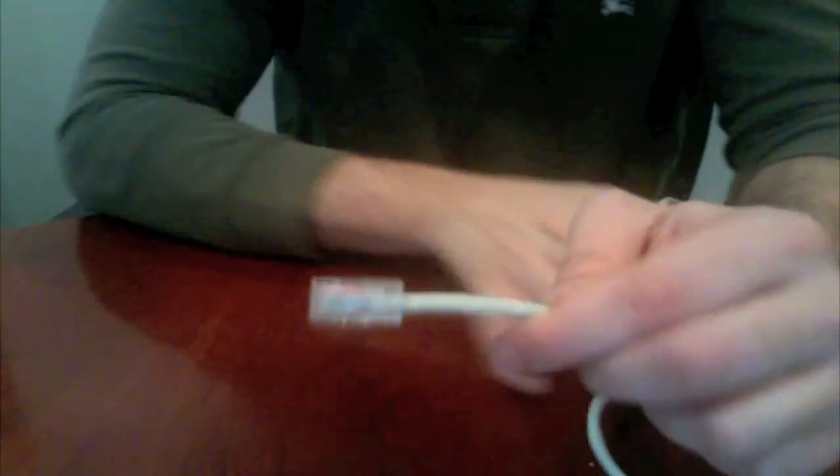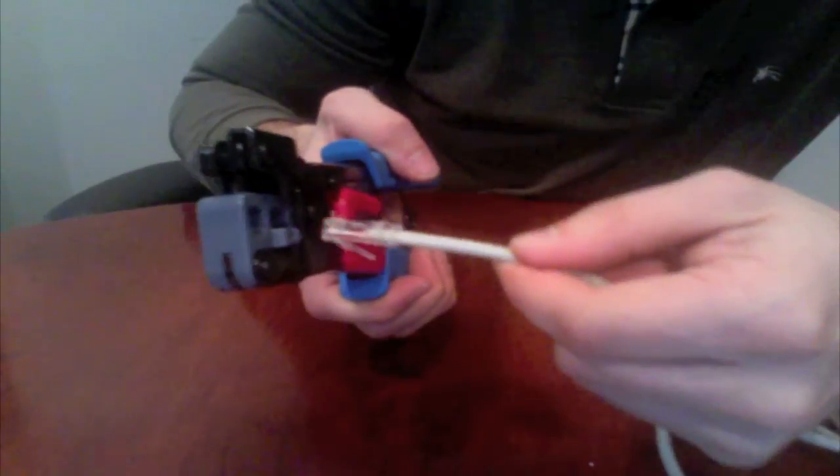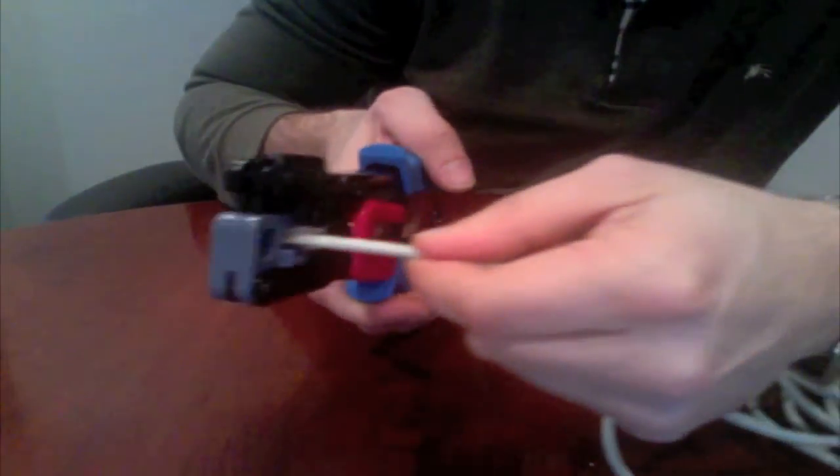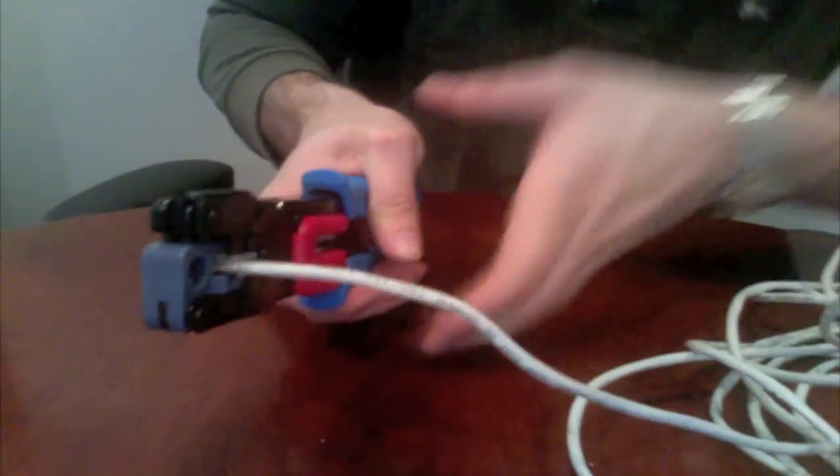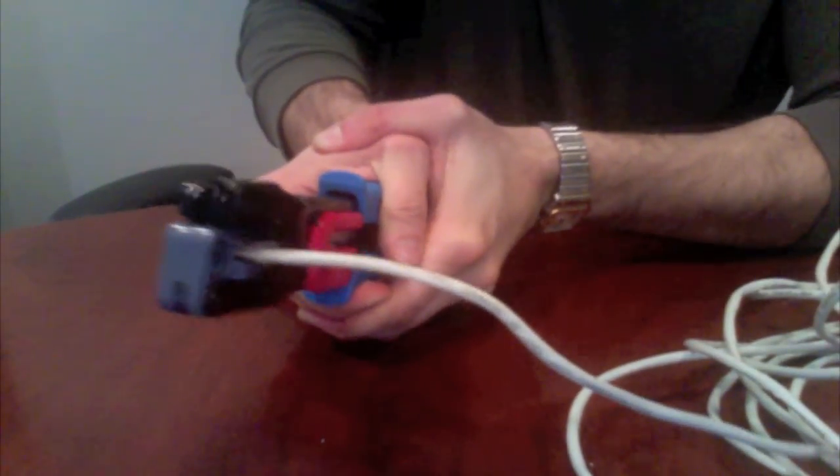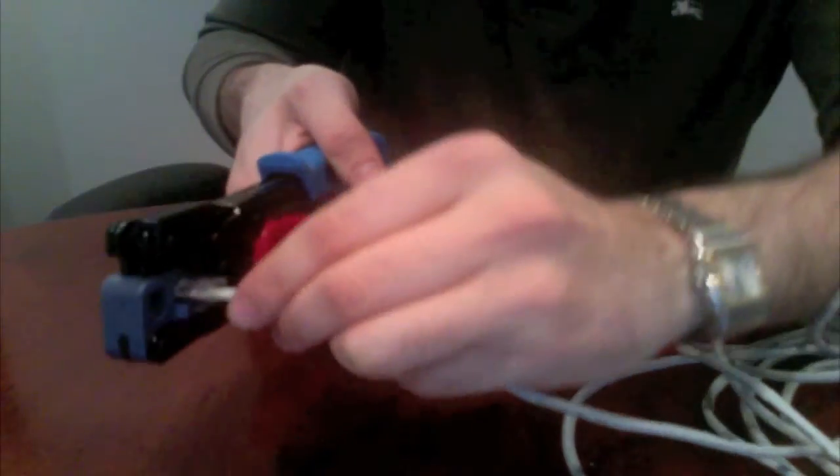Pretty easy right? Well we're not done yet. Now we have to secure our RJ45 connector to our cable. Let's grab our crimping tool and we want to insert the RJ45 connector into the RJ45 slot on our crimping tool. Now we squeeze. Make sure to squeeze tight. We don't want the connector coming loose from the cable.